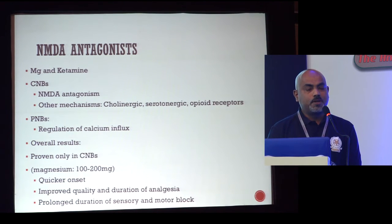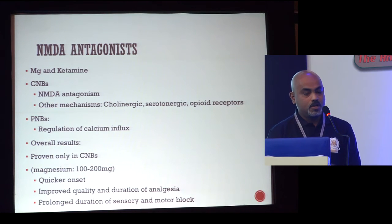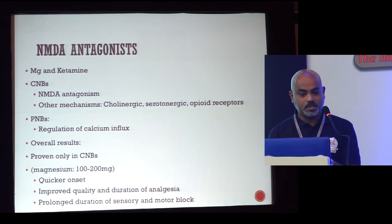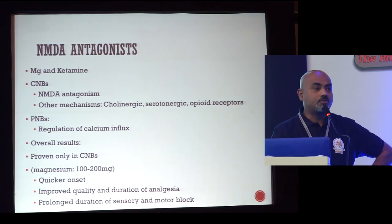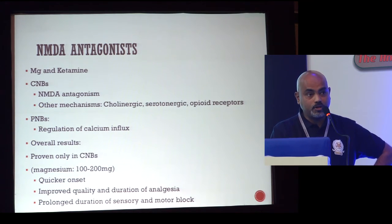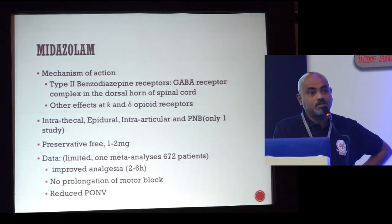Magnesium and ketamine — not many of you use these, but there is good evidence, especially for magnesium. In central neuraxial pathways it acts through NMDA receptors and also on cholinergic, serotonergic, and opioid receptors, and it regulates calcium influx. It is proven useful in central neuraxial blocks. A dose of 100 to 200 mg has shown quicker onset, improved quality and duration of analgesia, and prolonged sensory and motor block. A lot of the literature on magnesium has come from India.